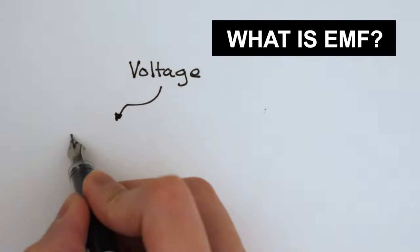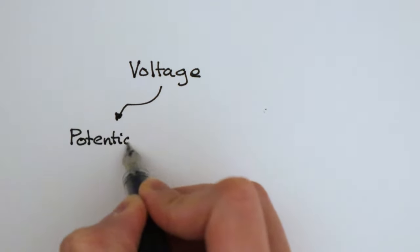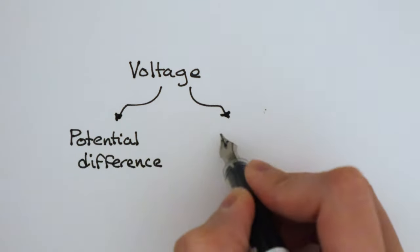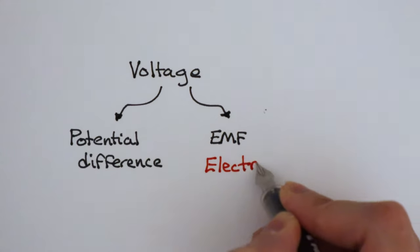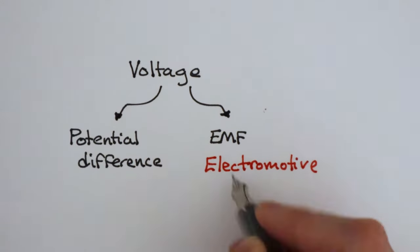The category of voltage can be split into two subcategories: potential difference and EMF. EMF is an acronym for electromotive force, although it isn't actually a force.